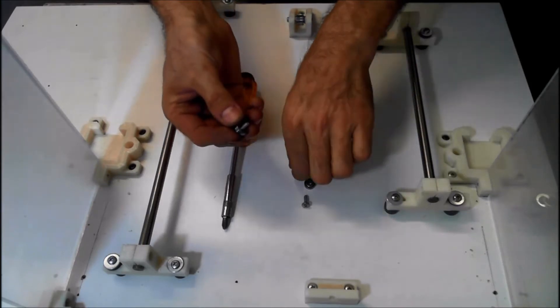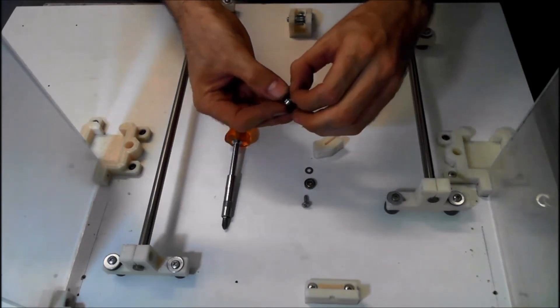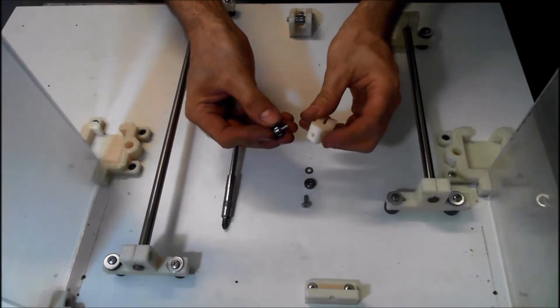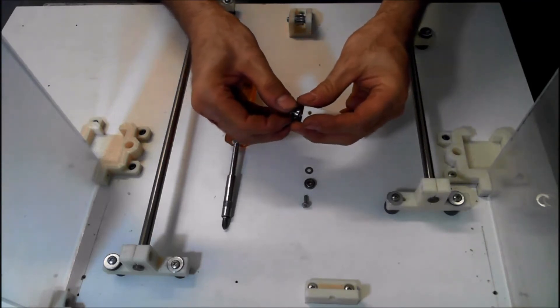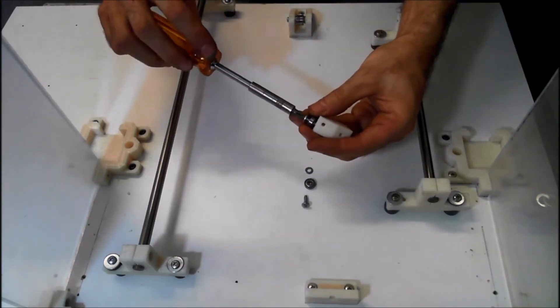Grab a bearing, grab a screw, put it through, put your washer on, and then screw. There's two holes here for the bearings. Screw that on.